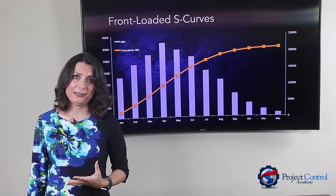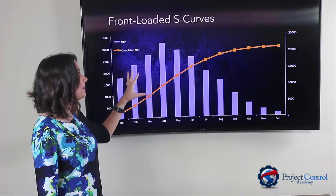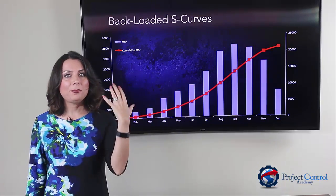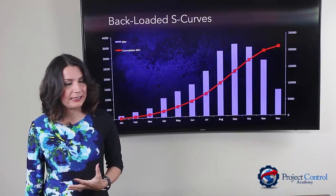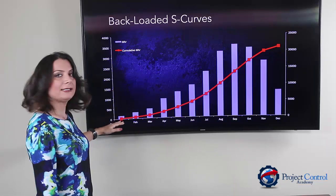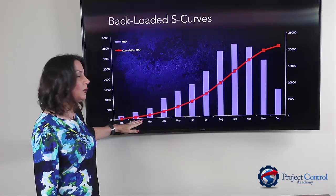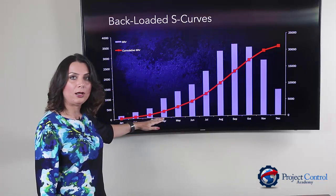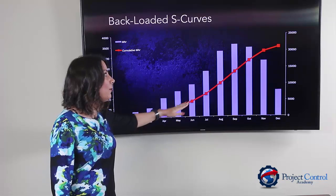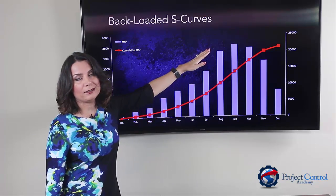Another form of S-curve that you will see, which is completely opposite of the front-loaded curve, is a back-loaded S-curve. This one starts very slowly at the beginning of the project and then ramps up toward the end.